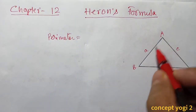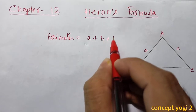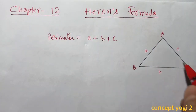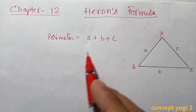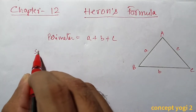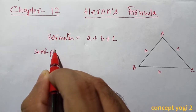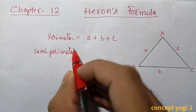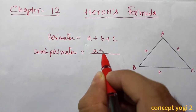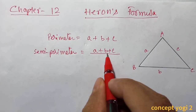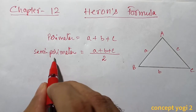Perimeter is the sum of the measure of all the sides: a plus b plus c. If we divide the perimeter by 2, we get the semi-perimeter. Semi-perimeter is half of perimeter, so semi-perimeter = (a + b + c) / 2, and it is represented by the letter s.